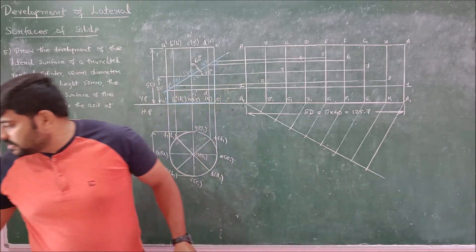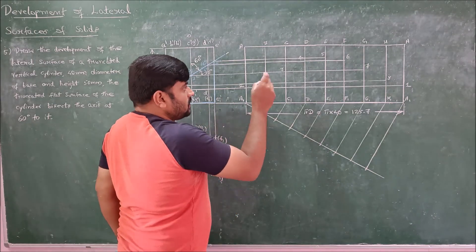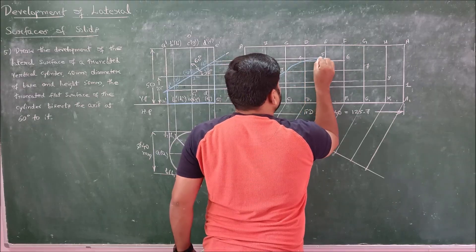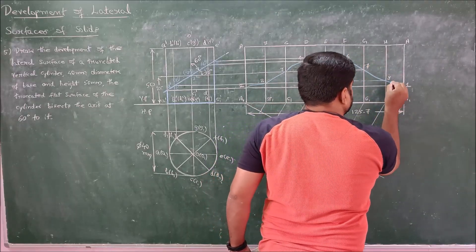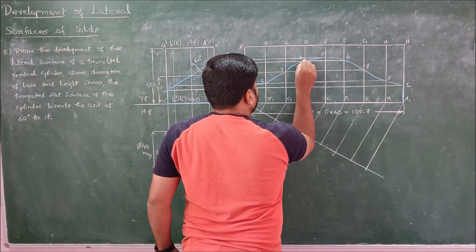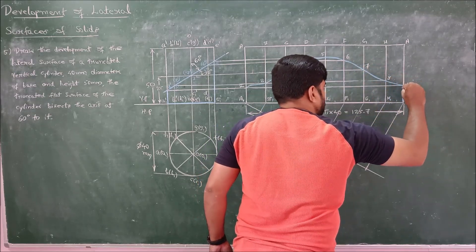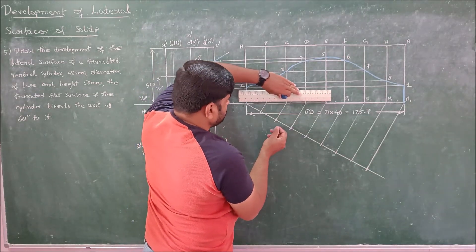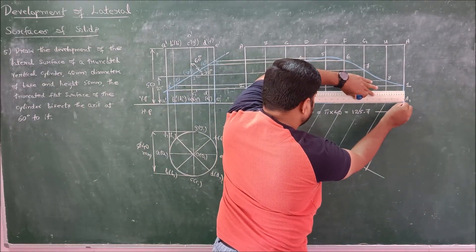Using a different chalk to draw the smooth curve, connect points 1, 2, 3, 4, 5, 6, 7, 8 and back to 1 with a smooth curve at the top. Then connect the straight horizontal bottom line to complete the development. This smooth curve at the top and straight line at the bottom form the complete development of the truncated cylinder.